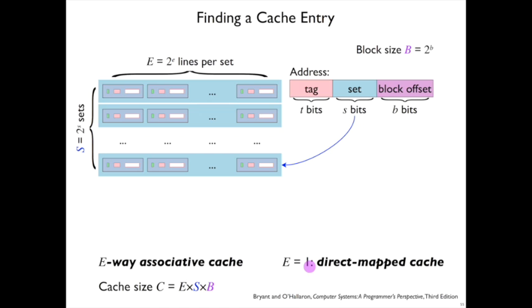And when E equals 1, there's a special word for that kind of cache that's called a direct mapped cache. Because in that case, as soon as you decode the set, then there's exactly one line that may or may not have the tag that you're looking for.